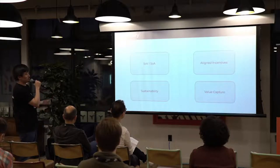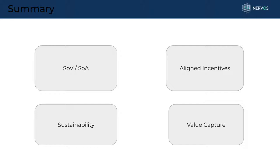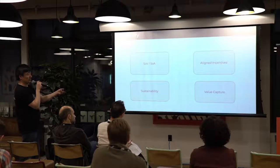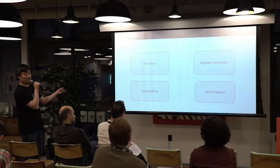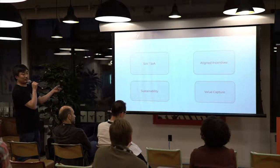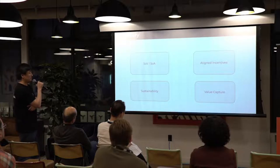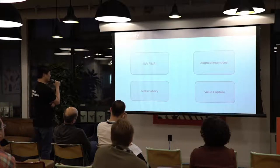In summary, the key objectives of this economic design are: move from transaction-based to store-of-value and asset-based; align incentives and enable value capture; and add a dimension of time to the economic model — rather than just facilitating consensus as a moment-in-time event, focus on long-term sustainability. That's the full overview of our design process.